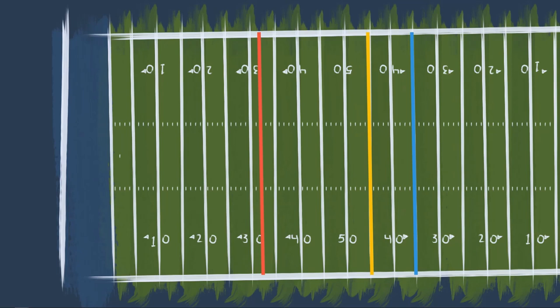This red line is where they have to get the ball to in order to be in field goal range. It usually ends up somewhere around the 32-yard line, which, as we know by adding 18, would result in a 50-yard field goal kick.